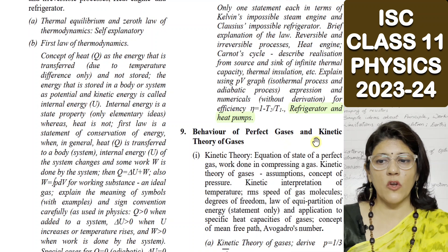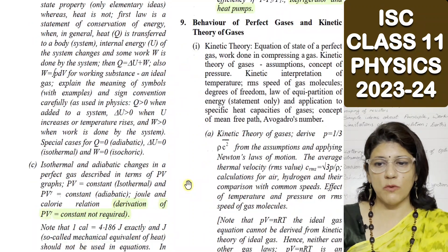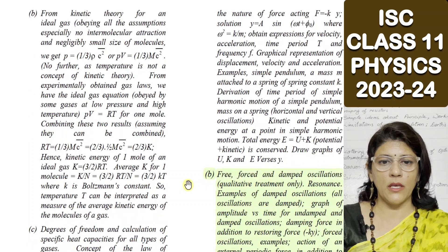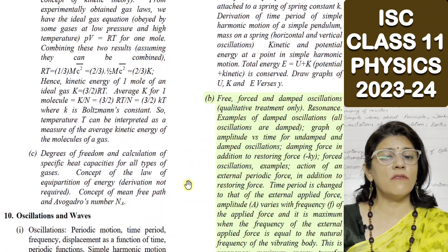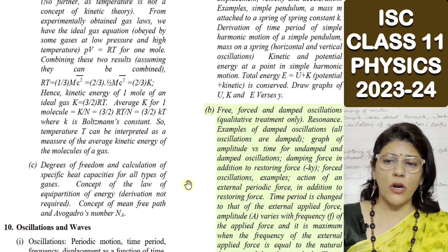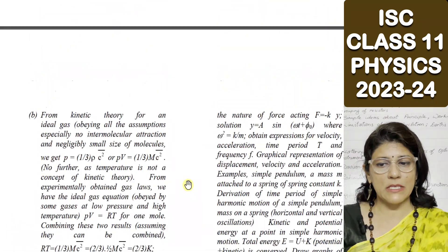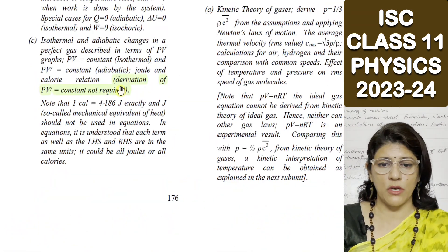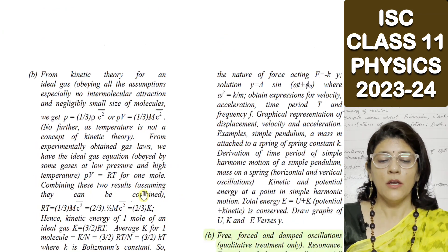The ninth unit is Behaviour of Perfect Gases and Kinetic Theory of Gases. Not many topics are deleted here. The derivation of PV = constant, shown in brackets, was already a deleted topic previously — it has been highlighted here simply to avoid any confusion.